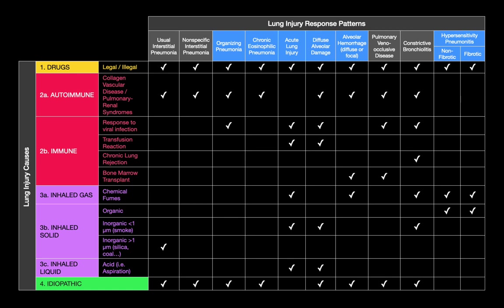The chart represents the ten different lung injury response patterns. Disease processes like organizing pneumonia and acute lung injury have appeared in earlier talks. In column one is another injury response pattern: usual interstitial pneumonia. If asked to describe UIP in as few words as possible — UIP is one of 10 lung injury response patterns. What insults are associated with a UIP injury response? Drugs, autoimmune phenomena causing vascular disease, inhaled inorganic particles specifically asbestos, and in many cases no clear answer — which we call idiopathic.